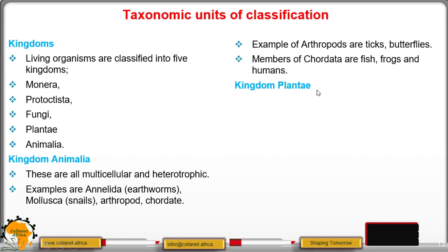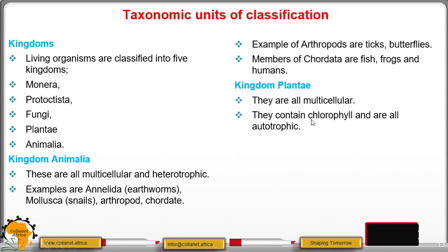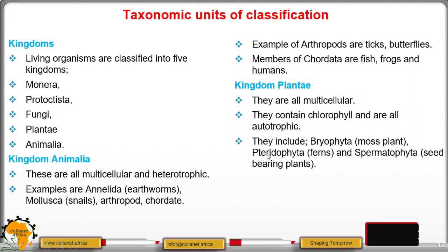In kingdom Plantae, organisms are also multicellular and they are autotrophic — that is, they make their own food. They include Bryophyta, for example the mosses; then Pteridophyta, the ferns; and then Spermatophyta, those organisms that bear seeds.